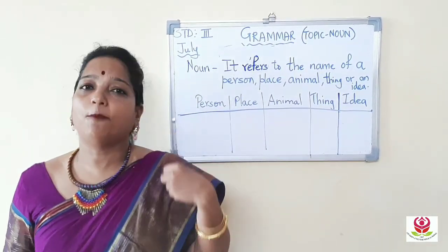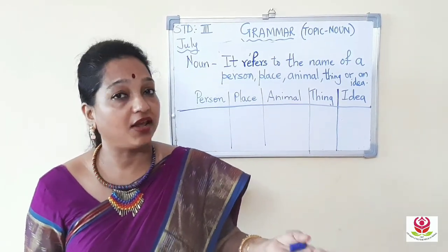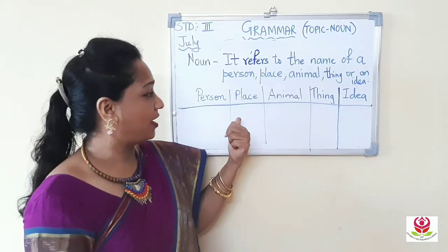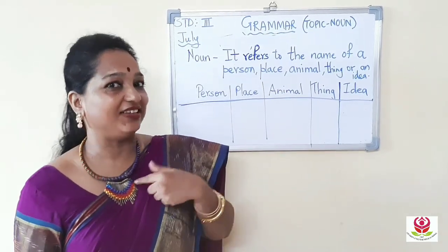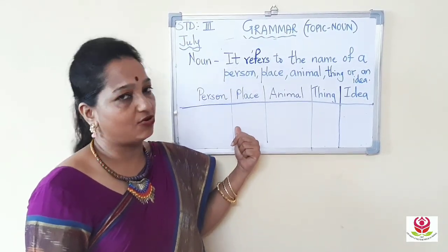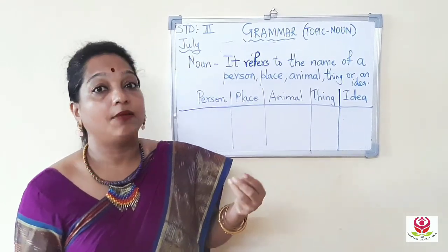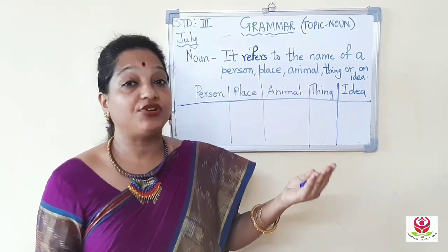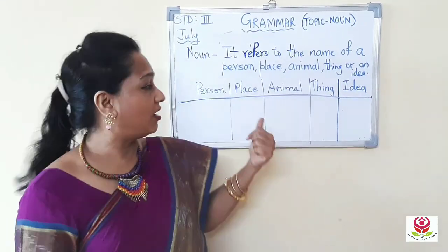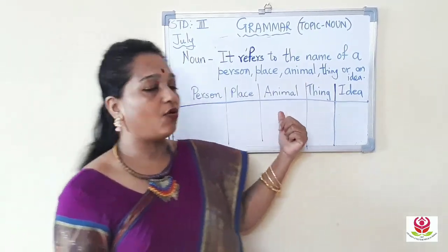When we talk about place, examples include kitchen and garden. Most students live in Mulund and some in Thane, so Mulund and Thane are names of places. Sharada teacher lives in Vikroli, so Vikroli is also a name of a place. Country names like India, China, and Pakistan are also names of places.